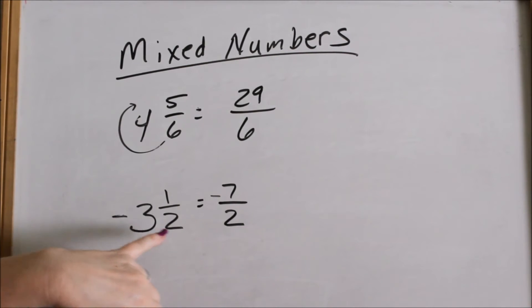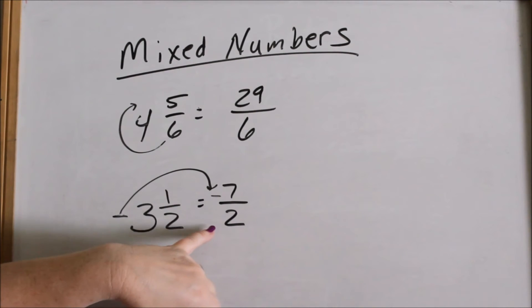Okay, this negative just gets transferred over to here to say that it's a negative number. So negative three and one-half is the same thing as negative seven-halves.